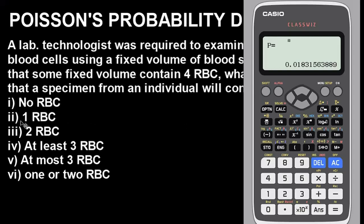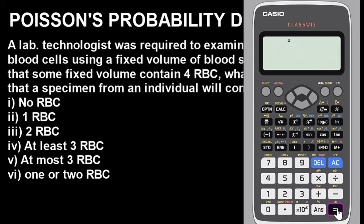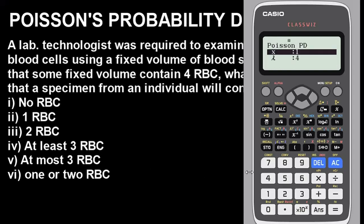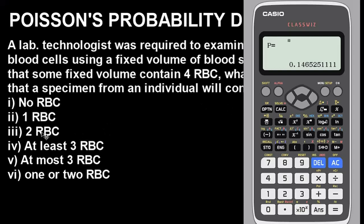When there is no red blood cell you get approximately 0.0183. Now for one red blood cell, press AC to clear, remove the 0 and input 1, then press equals again. This gives the value for when there is one red blood cell. Similarly, press AC, remove 1 and put 2, then press equals — this gives the value for when there are two red blood cells.